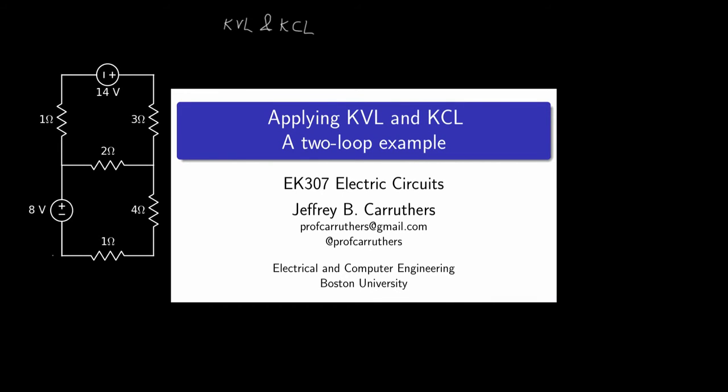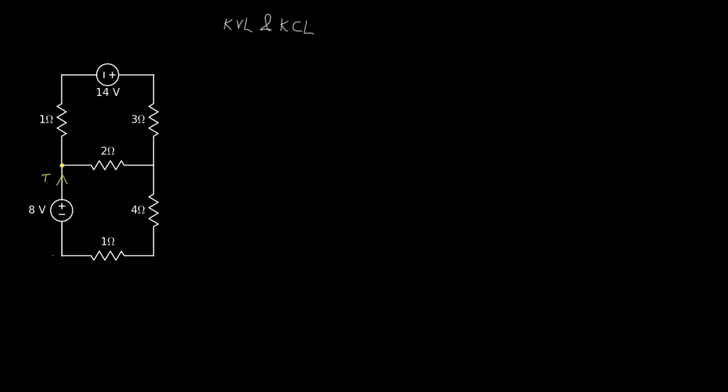Let's do an example of applying the voltage law and the current law to the following circuit with two loops. Let's label that current I1, let's label that current I2, and finally let's label that current I3.